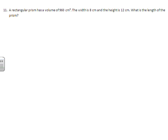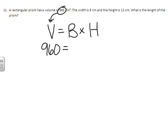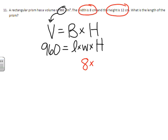Number 11. A rectangular prism has a volume of 960 centimeters cubed. The width is 8, and the height is 12. What is the length? This time we're going to start with volume equals area of the base times the height of the prism. Volume is 960, so we're going to substitute that amount. The base in a rectangular prism is length times width. So length times width times height. We can substitute in 8 centimeters for width and 12 centimeters for height.